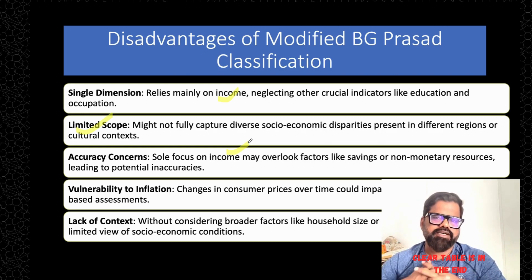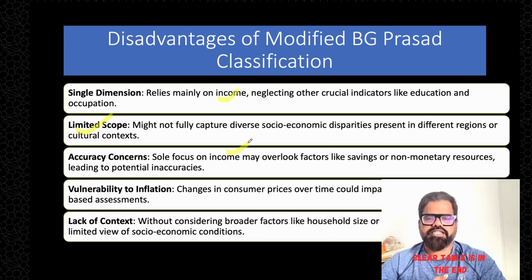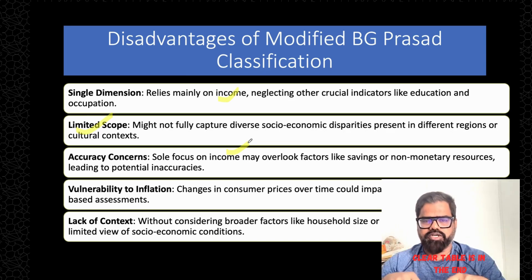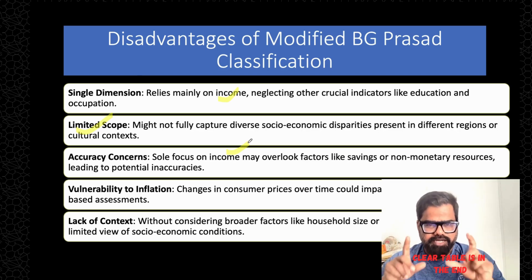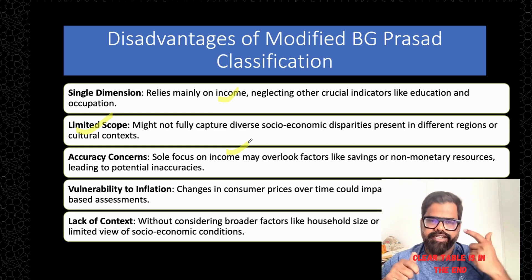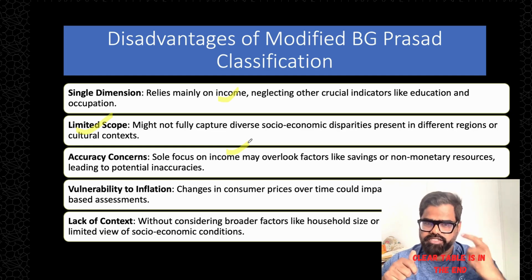The broader factors — household size, assets, land, the caste system — which are taken care of by other classifications are missing here. These are the possible disadvantages of modified BJ Prasad classification. To cut the long story short, you need to know the correction factor, and you calculate it by multiplying the linkage factor of 1982, the linkage factor of 2001, and the linkage factor of 2016.